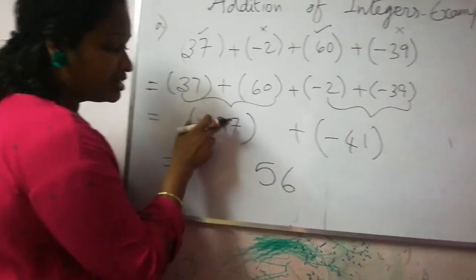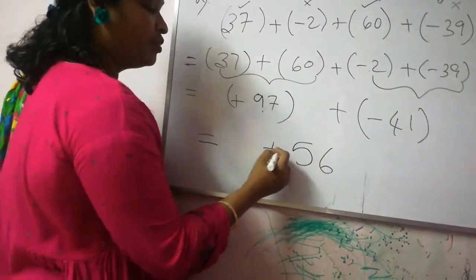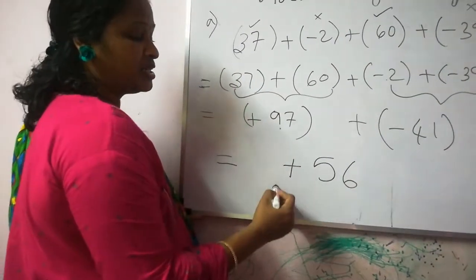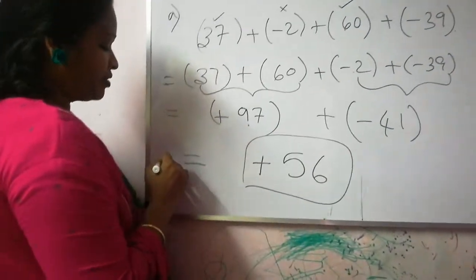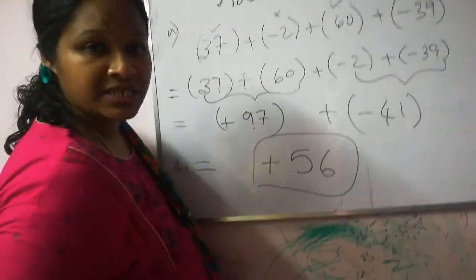And the answer takes the larger number sign. What is that? Larger number sign. This is your answer. Got it children? Is it clear children?